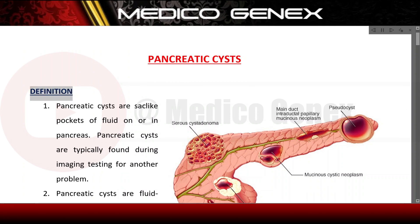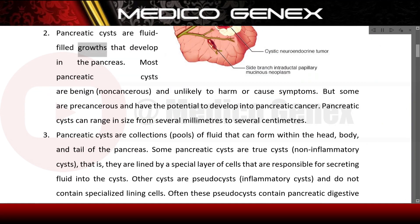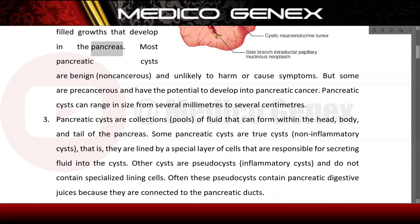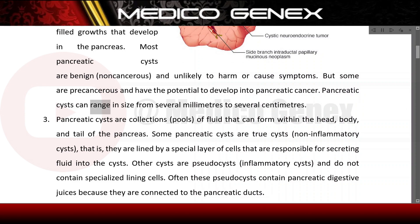Pancreatic cysts are sac-like pockets of fluid on or in the pancreas. They are typically found during imaging testing for another problem. Most pancreatic cysts are benign, non-cancerous, and unlikely to cause symptoms, but some are precancerous and have the potential to develop into pancreatic cancer. They can range in size from several millimeters to several centimeters.